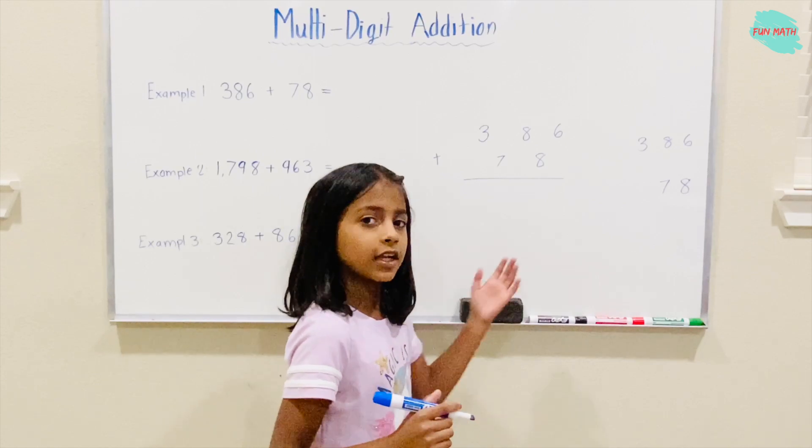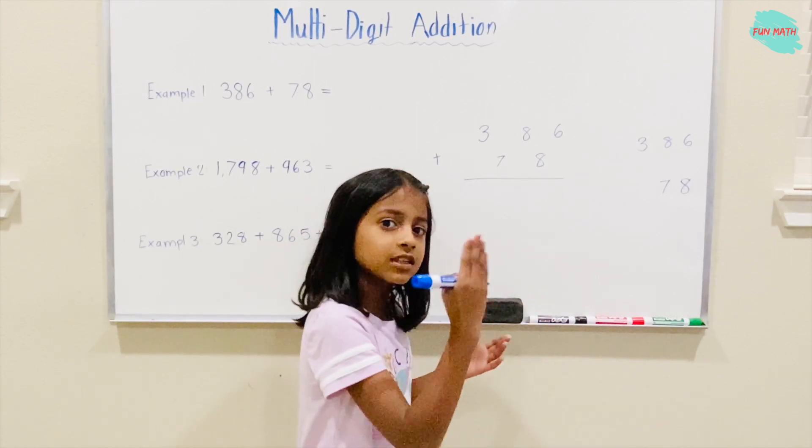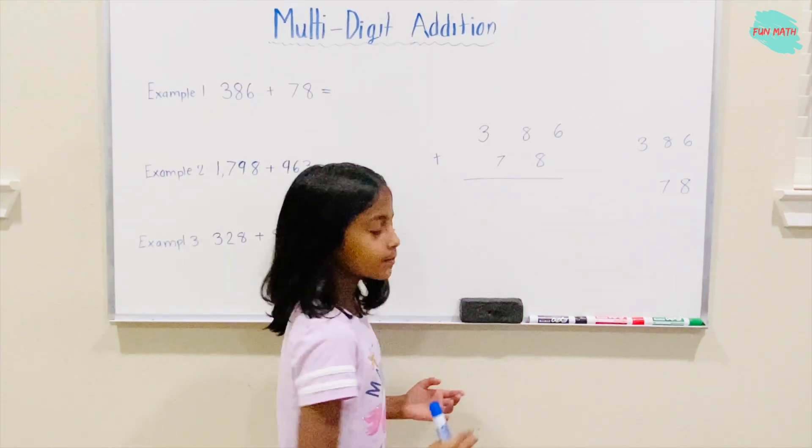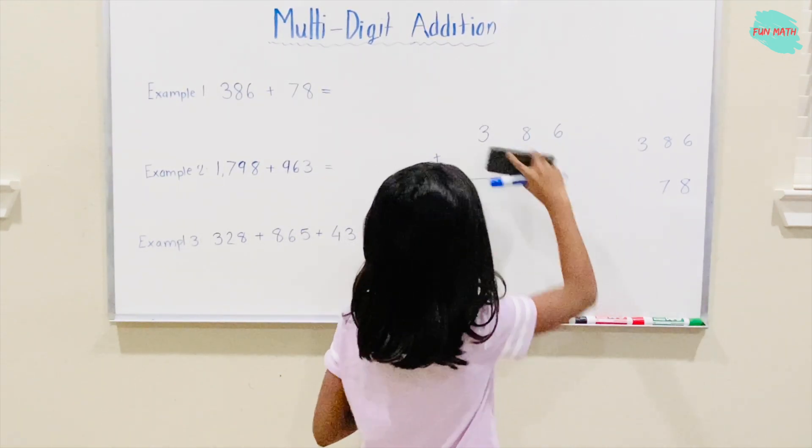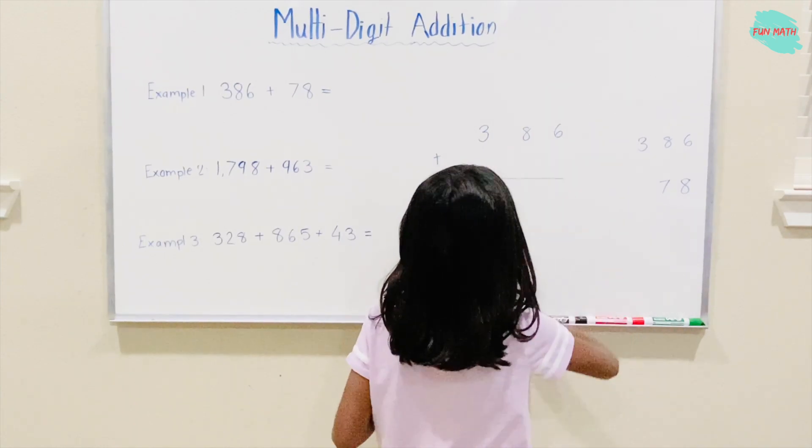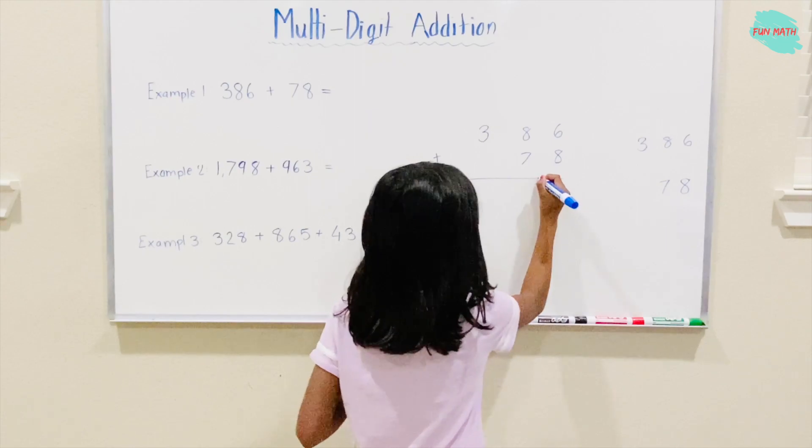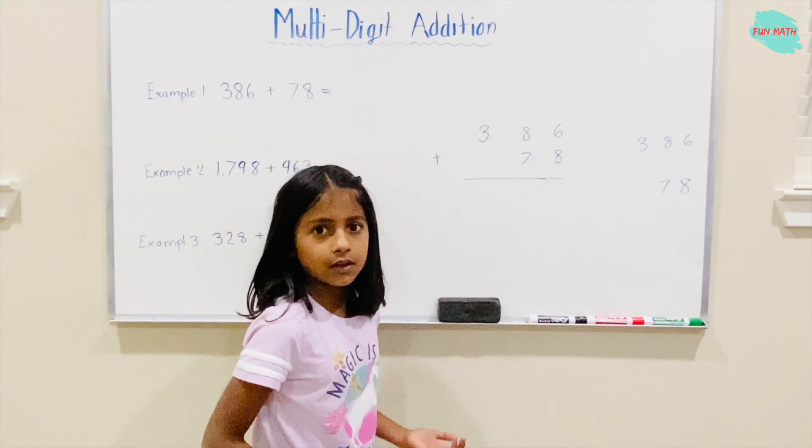So to get your sum, you have to stack them up in the ones column and in the tens place. So we're going to take 78 and write it in a column. Now we can get our answer.